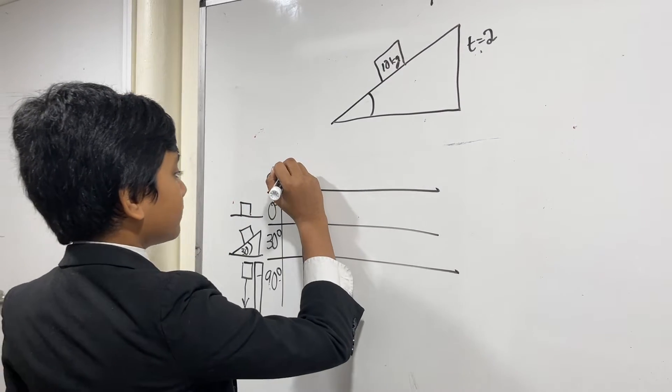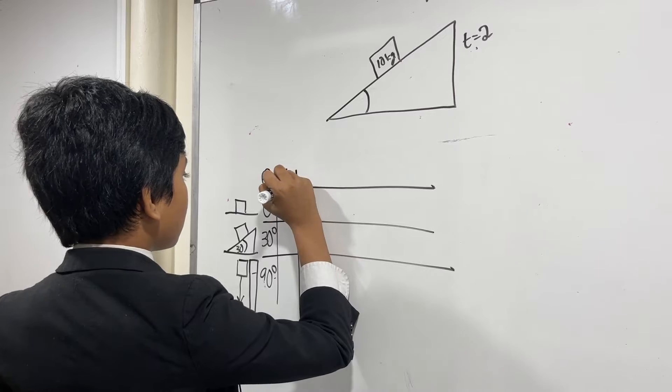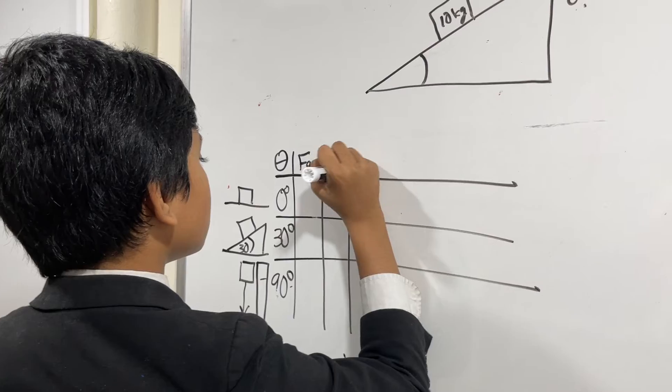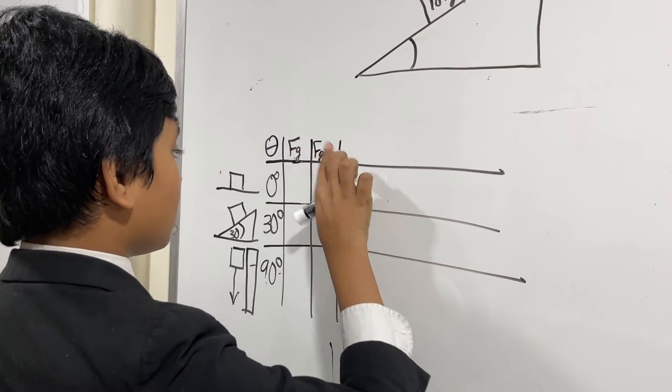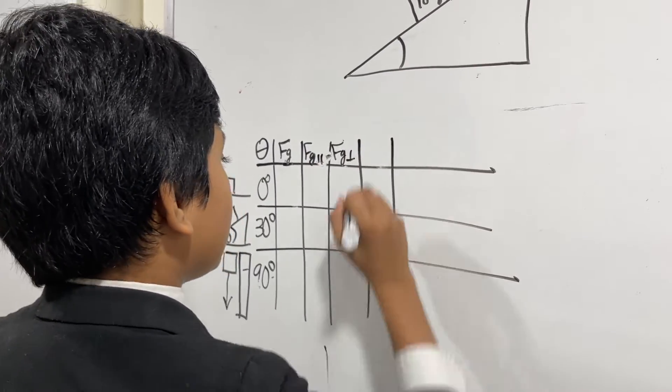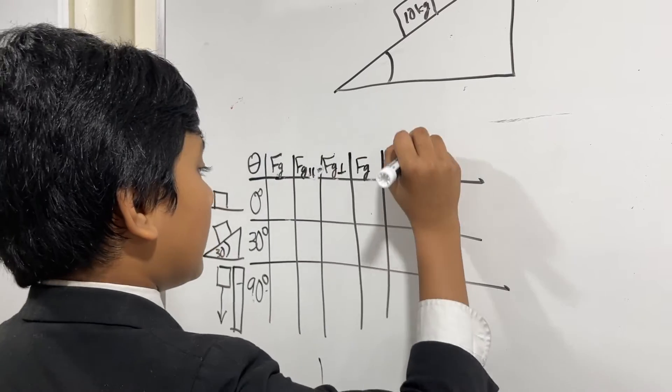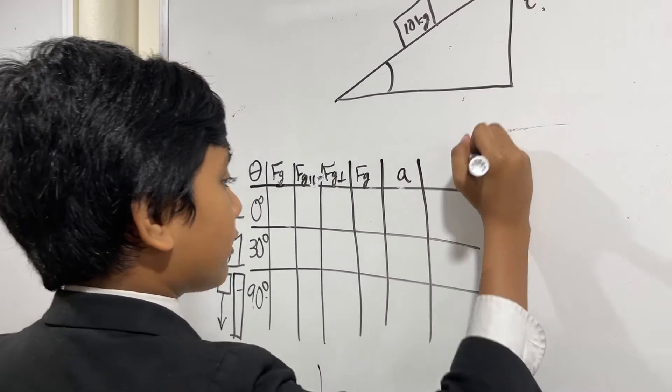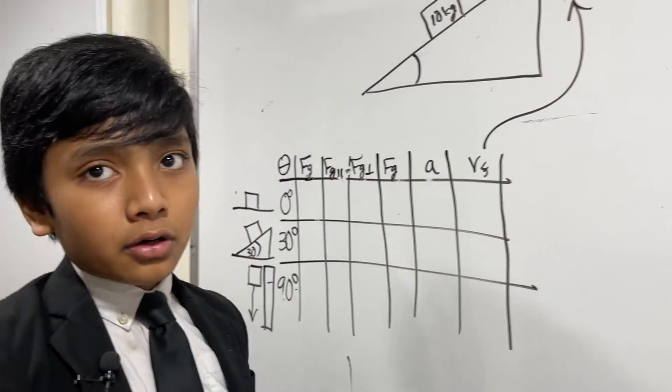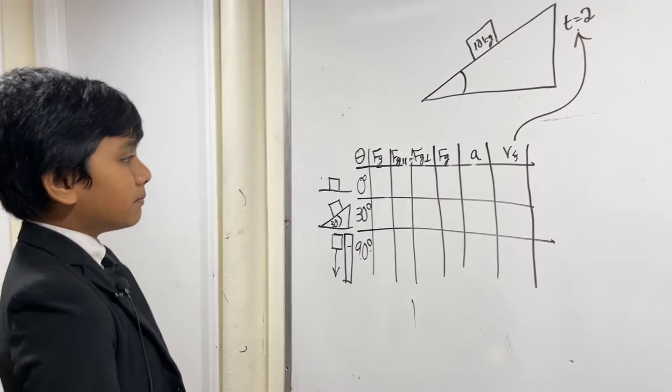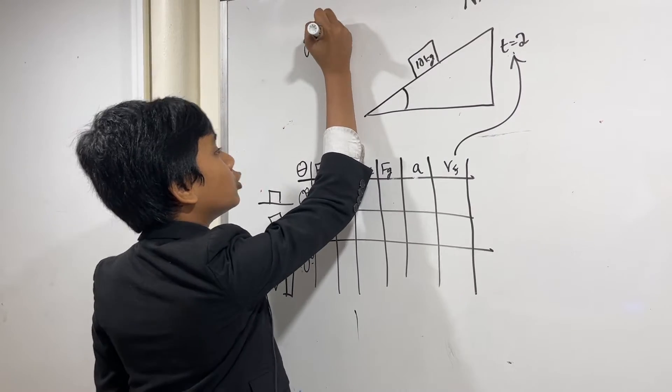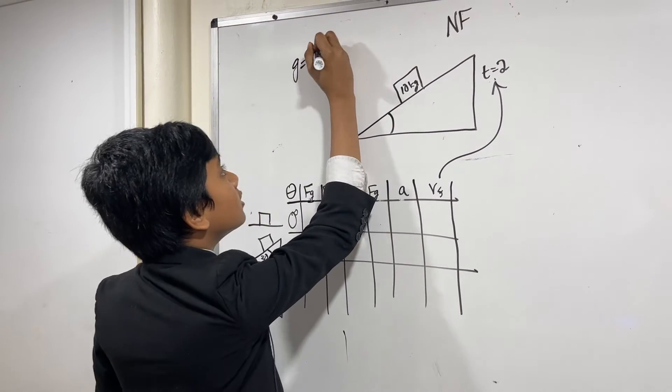So let's begin. So we have FG, then we have FG parallel. Oh no, that's FG perpendicular. And then we have our calculated acceleration and our velocity final. Our velocity final is why we needed this plane. And I forgot to mention, do not use 10. We have 9.8.